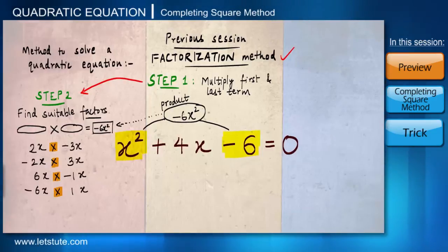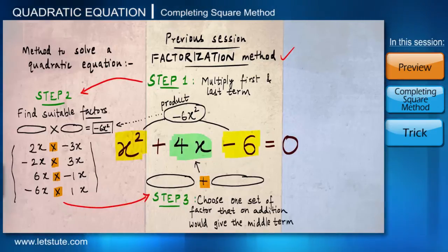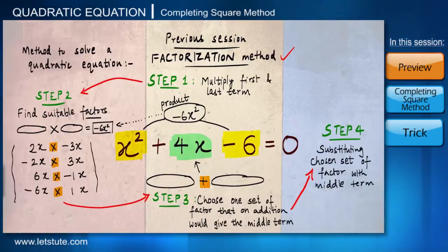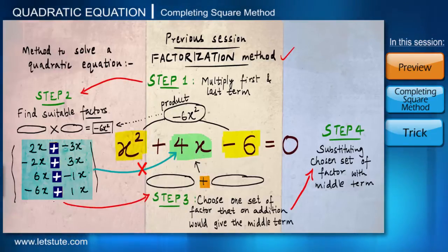We can only come across these four combinations of factors. Now, after we get all possible factors, step 3 would be to choose any one set of these factors that on addition would give us the middle term, which is 4x in this case. If we are able to find that set of factors, then step 4 is simply substituting that set in place of this middle term 4x and solving the quadratic equation further. But in this case, if we carefully notice, it seems we don't really have any such set which on addition will give us the middle term 4x.